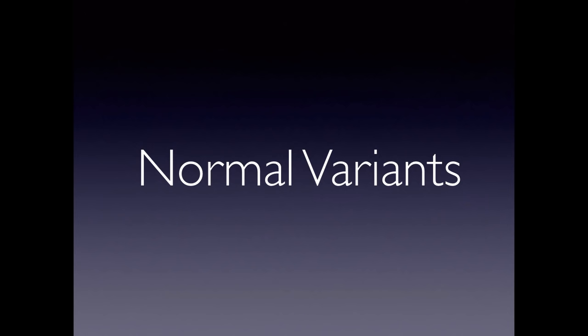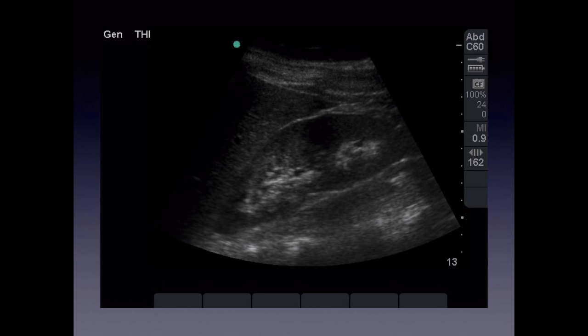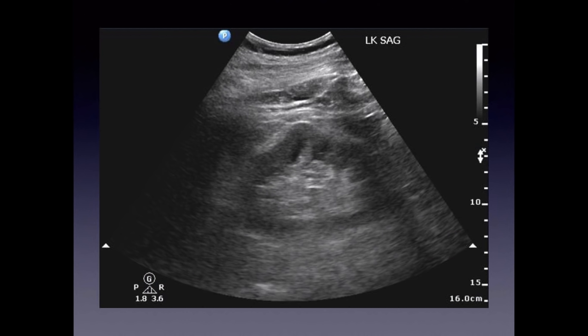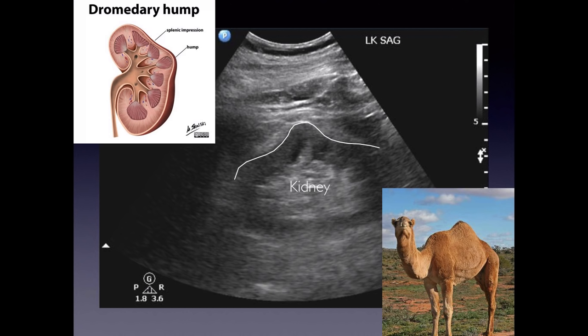A couple of normal variants to be aware of: a dual collecting system looks like there's a break or space in the renal sinus, and you'll occasionally see this. Another variant is the dromedary hump — named after the camel — seen on the left kidney where the contour rises up like a hump. This is related to the kidney fitting up against the spleen on the left side and is entirely normal.